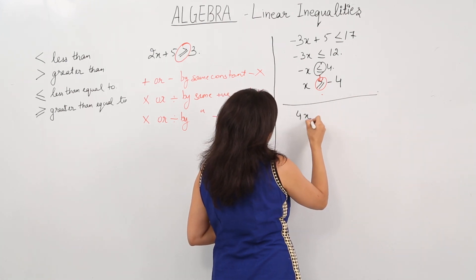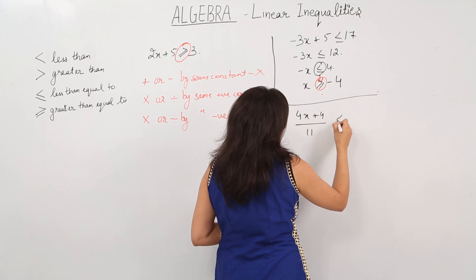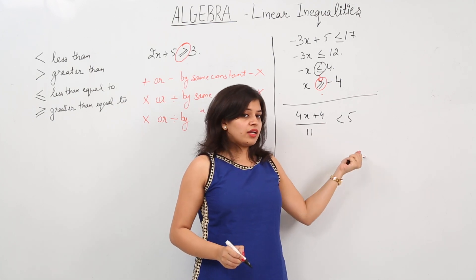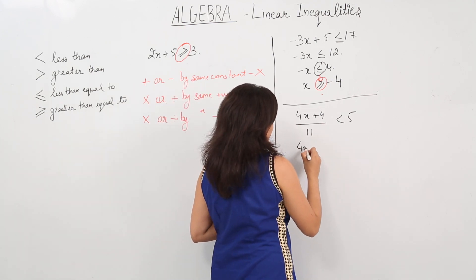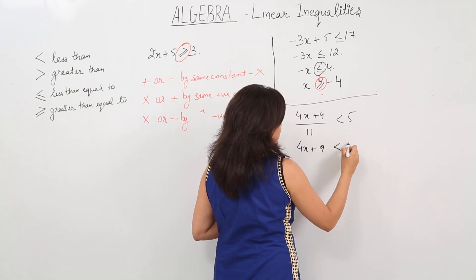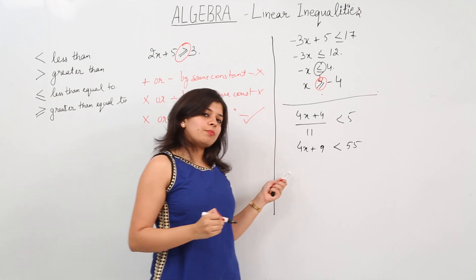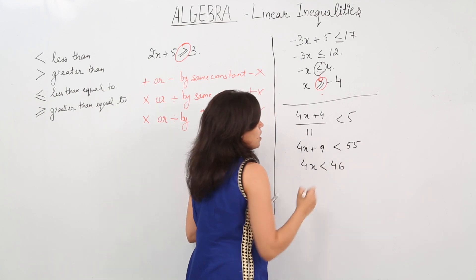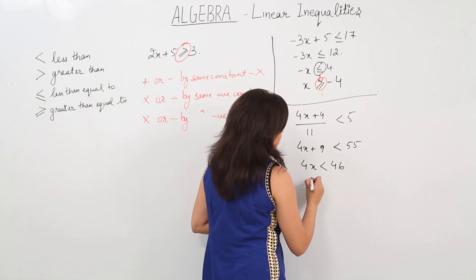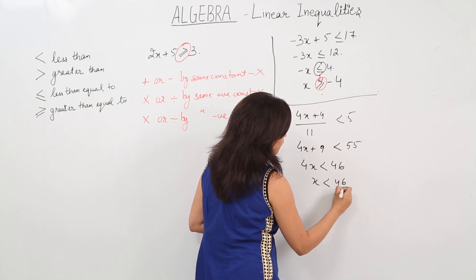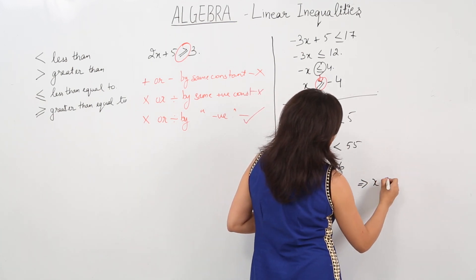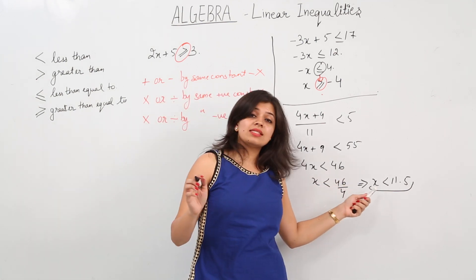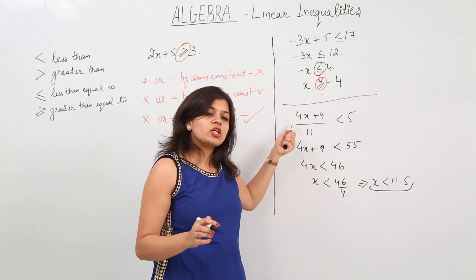Let's look at another example: 4x plus 9 upon 11 is less than 5. First, we multiply both sides by 11, giving us 4x plus 9 is less than 55. Subtracting both sides by 9 gives 4x is less than 46. Dividing both sides by 4, we get x is less than 11.5. So all values of x less than 11.5 satisfy this inequality.